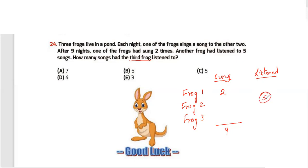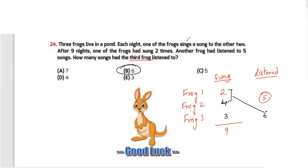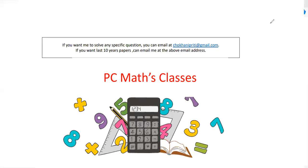One frog listened to five songs — a frog doesn't listen to its own song. Frog 1 sang two times. Frog 2 listened to five songs. We need to figure out how many songs frog 3 sang. The total is nine nights, so frog 2 must have sung four songs for it to total nine. Since frog 3 doesn't listen to its own songs, frog 3 listened to nine minus three, which is six songs. My answer is option B.